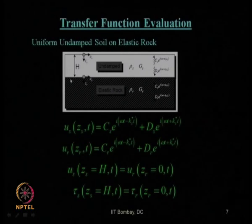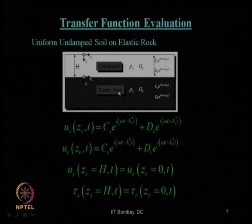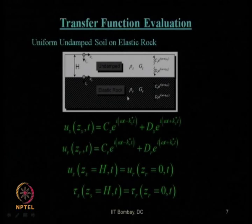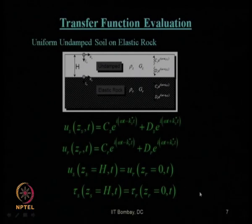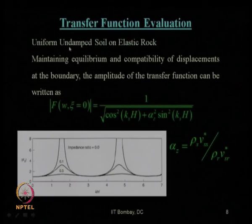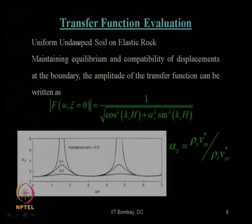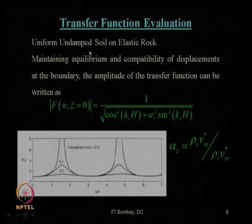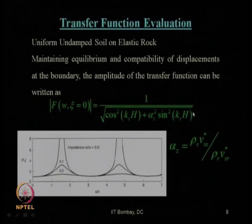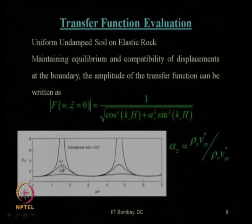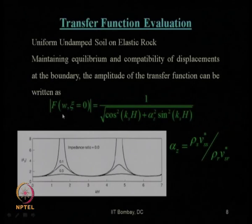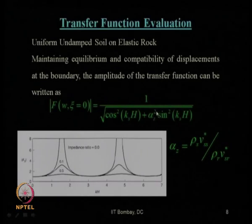Then we talked about uniform undamped soil on an elastic rock. Earlier we talked about rigid rock, then we came to consider the elastic rock which is more practical. Even without considering material damping or viscous damping, because of the non-zero impedance ratio between the elastic rock and the soil, you will get a non-infinite value of the transfer function at a particular value of kh. This is the expression for the transfer function when the specific impedance ratio between the soil layer and the rock layer is considered — that is, considering the elastic rock.